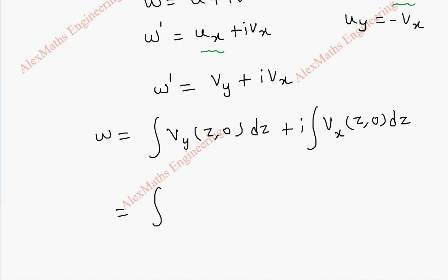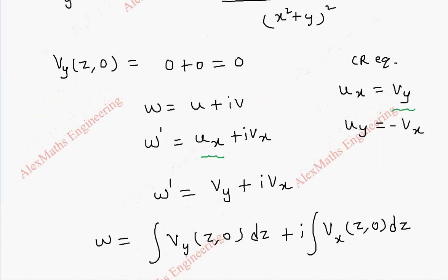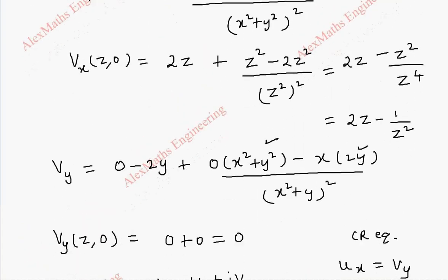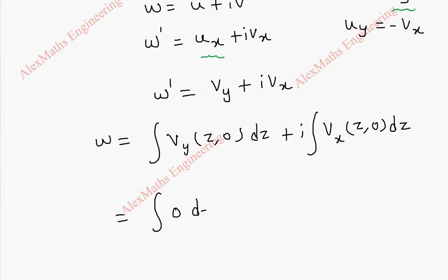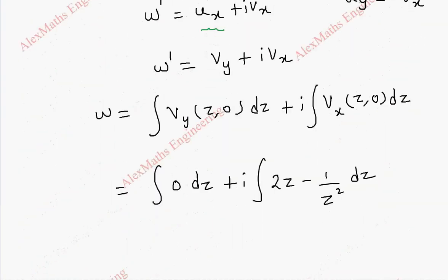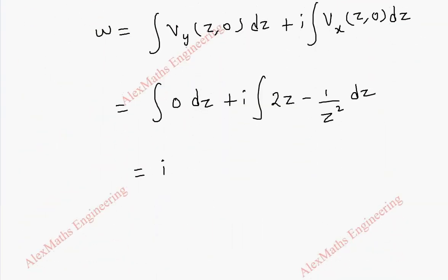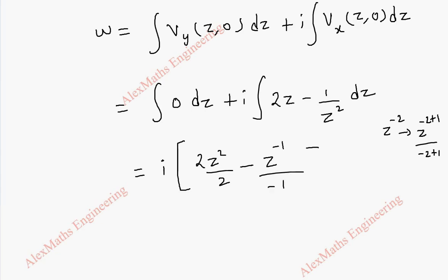The first part is 0 because vy(z, 0) is completely 0, and vx(z, 0) = 2z − 1/z². So w = 0 + i·∫(2z − z⁻²) dz. Integrating: 2z² / 2 = z², and z⁻² integrates to z⁻¹/(−1) = −z⁻¹. So w = i·(z² − (−1/z)) + c = i·(z² + 1/z) + c.